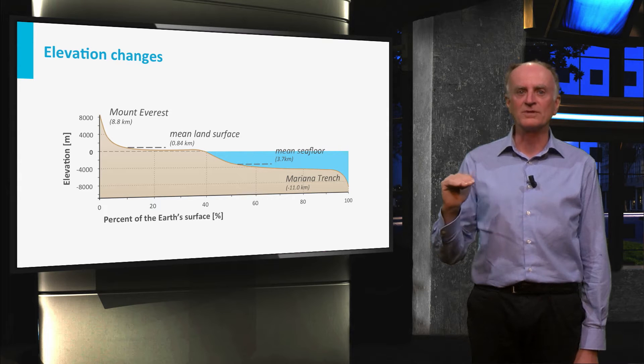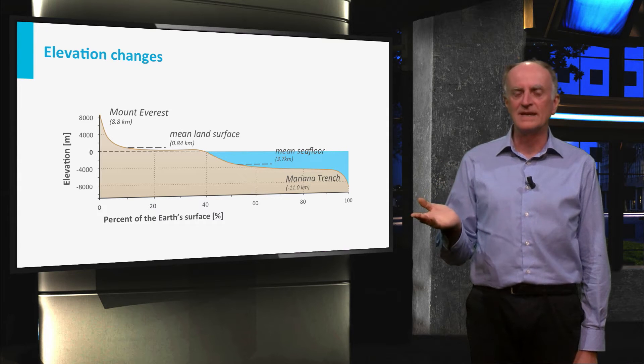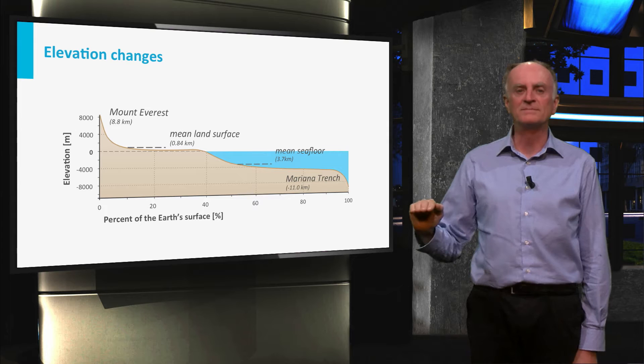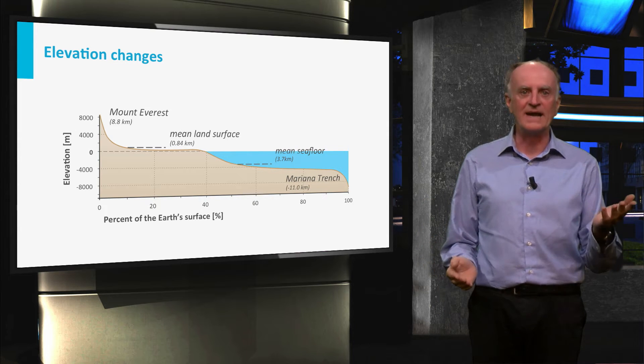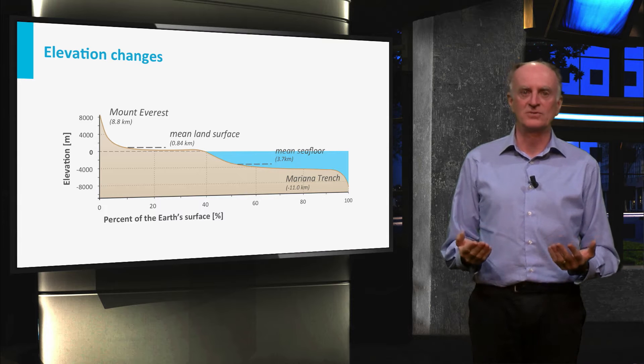An even larger portion of the Earth, nearly 50%, lies at around 4 kilometers below sea level. Why are only few regions very high and a lot of regions close to sea level?